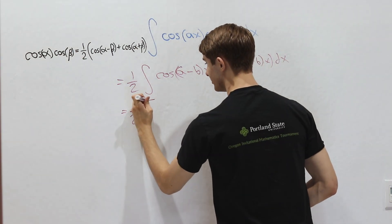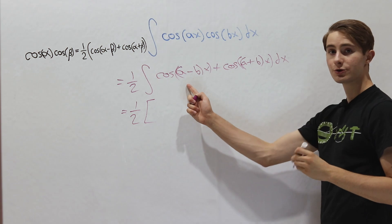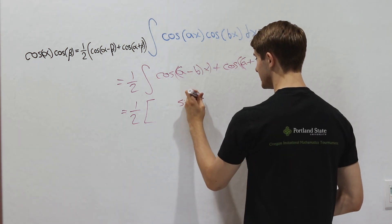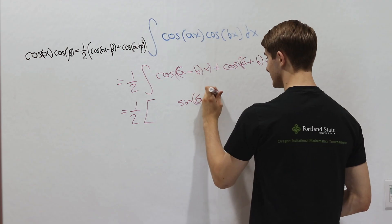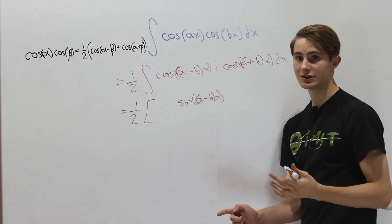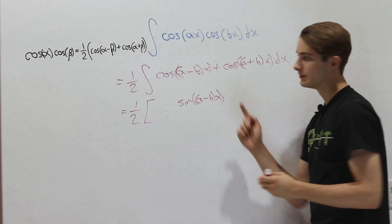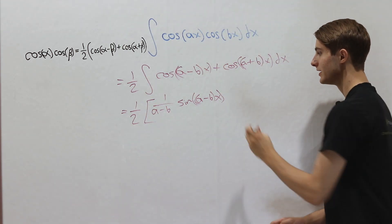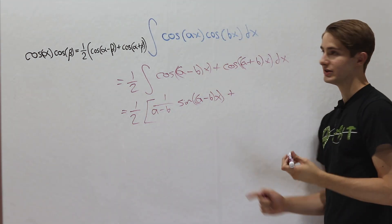First, we're going to get a 1 half out in the front, and then the integral of cosine is going to give us sine, so we can write the input, a minus b times x. And then in order to use the u substitution, we would have to divide by this constant multiple. So we get 1 over a minus b.